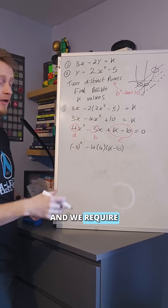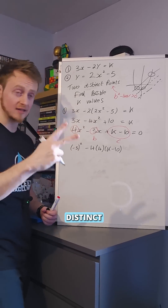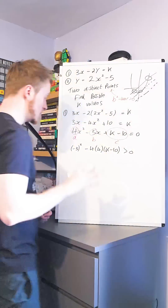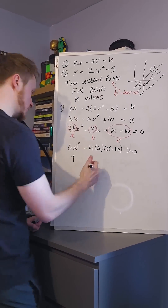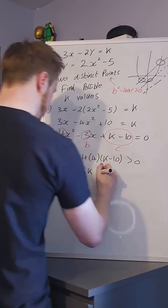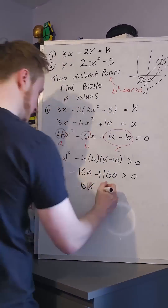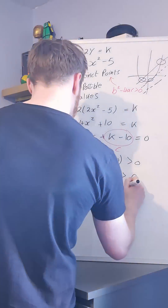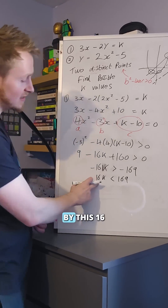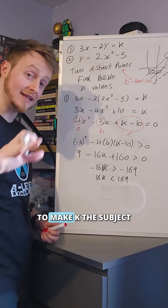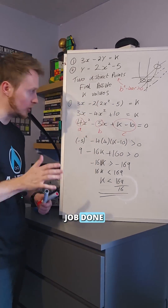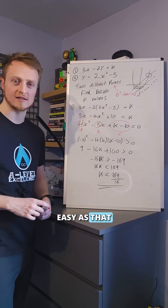Sub it into that discriminant. And we require for two distinct solutions, it needs to be positive. Then there's one more step — we need to divide by 16 to make k the subject. And there we go. Job done. Full marks. Easy as that.